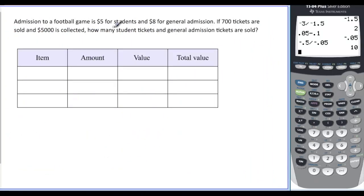So let's look at this one. Admission to a football game is $5 for students, $8 for general admission. If 700 tickets are sold, and $5,000 is collected, how many student tickets and general admission tickets are sold. So first we have to decide what our variables are. What are the two items that we're talking about? And the items that we're talking about are student tickets and general admission tickets. So we'll call this student, and I'll call this Gen Ad, general admission. And I'm going to let, it tells me that I have a total of 700 tickets collected, but I don't know how many of each. But I'm going to plug in what I know. I know there's 700 total, and I know that the $5,000 is collected. So that's a total amount of money or total value.